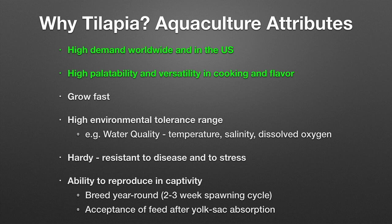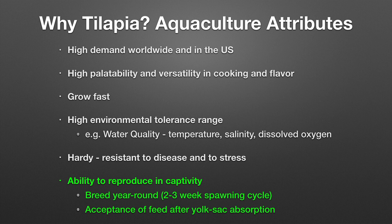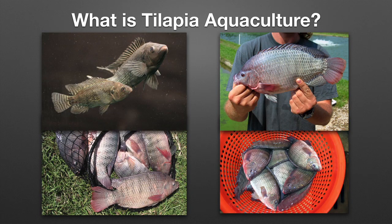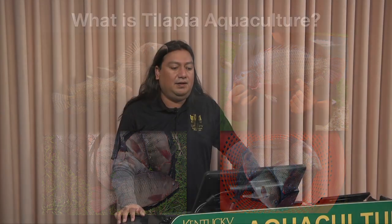Why tilapia? There is high demand worldwide and in the U.S. Tilapia has high palatability and versatility in cooking and flavor. Biologically they grow fast, have high environmental tolerance for water quality parameters such as temperature, salinity, and dissolved oxygen. They are hardy when handled, resistant to disease and stress, and we have the ability to reproduce them in captivity. They can breed year round with a two-to-three week spawning cycle, and they accept feed readily after yolk sac absorption.